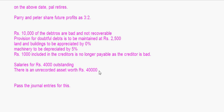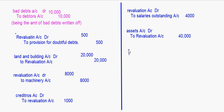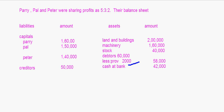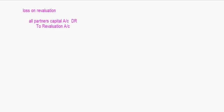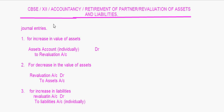The bad debts entry we passed initially will be transferred to the Revaluation Account because the amount of debtors is decreasing — out of 58,000 debtors, 10,000 is irrecoverable, so debtors become only 48,000, which is a decrease in the asset. So: Revaluation Account debit to Bad Debts Account — 10,000 rupees. These are all the journal entries for this question, covering all the revaluation entries needed at retirement of a partner.